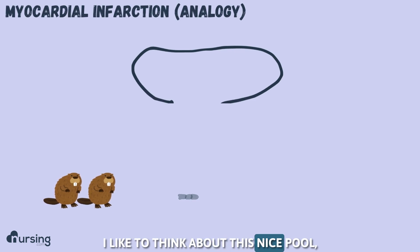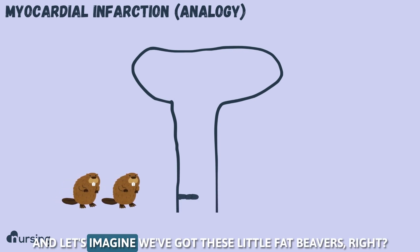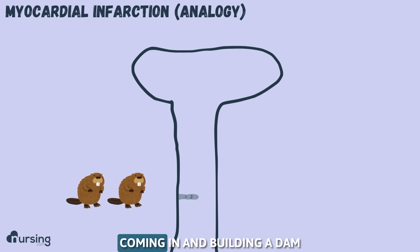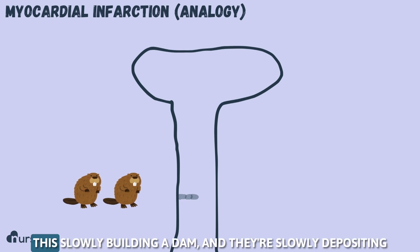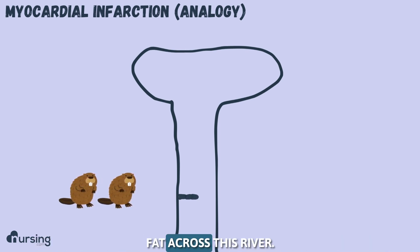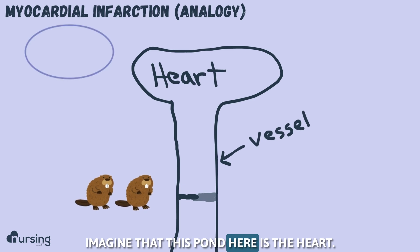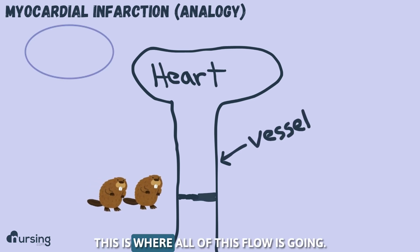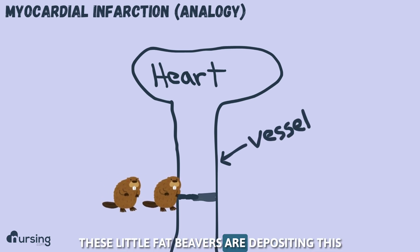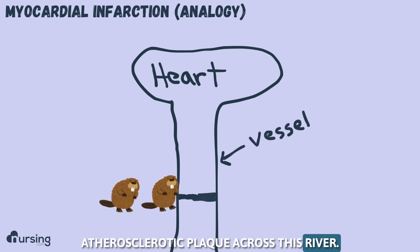I like to think about this nice pond at the end of a river. Let's imagine we've got these little fat beavers coming in and building a dam. They're slowly building a dam and slowly depositing fat across this river. Imagine that this pond here is the heart — this is where all the flow is going, and this is one of our coronary vessels. These little fat beavers are depositing atherosclerotic plaque across this river.